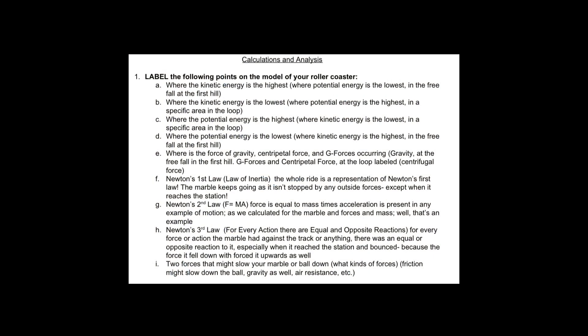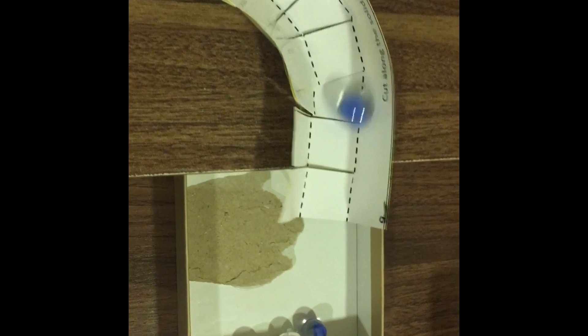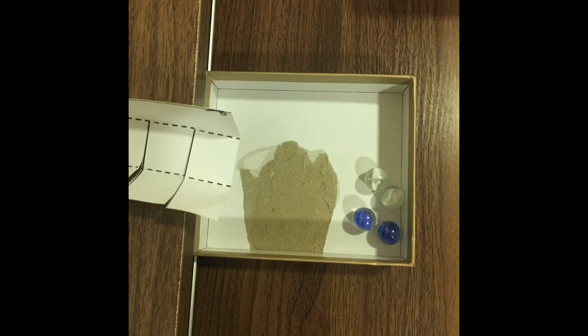Let's talk about labels. Before I get into it, I need to clarify that everything during a ride represents all of Newton's laws, and I'm only going to pick what best represents the specific law. First is Newton's first law of inertia. Newton's first law states that if an object is in motion, it would keep in motion unless it's stopped by another force. As we see here, the marble kept moving until it was stopped by the station.